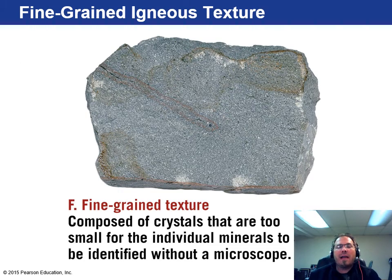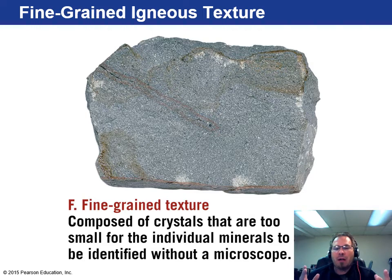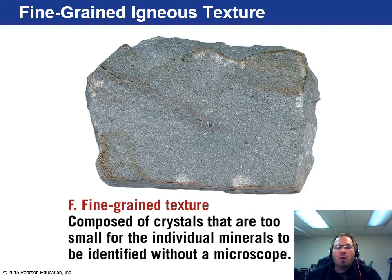Here's an example of fine grain texture. When you look at it with the naked eye, it's composed of crystals too small for the human eye to see without a microscope — that's the definition of fine grain. These are very common; in fact, fine grain igneous rocks are probably the most common type, because most don't have a lot of time when they're formed to grow the really big crystals.